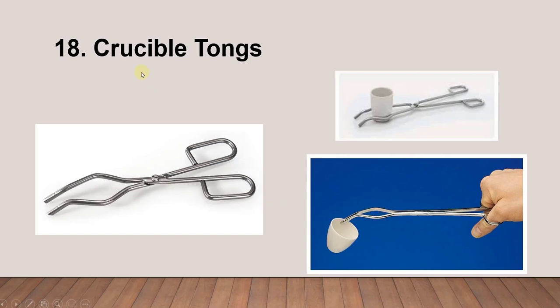Next is the crucible tongs. We don't call it a crucible holder — it's crucible tongs. Normally the crucible will be used for heating, either over a burner or in an oven, so it will be very hot and you have to hold it with tongs.